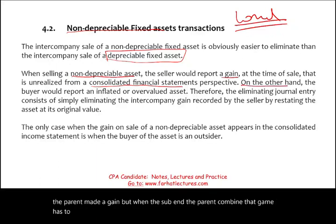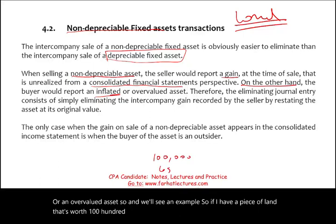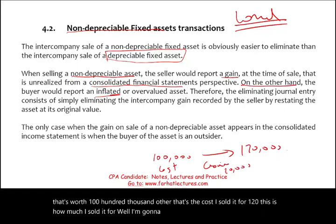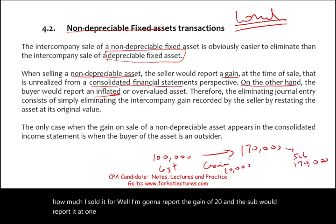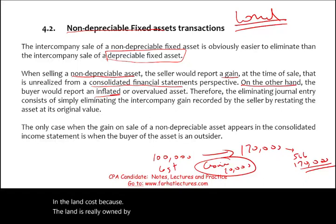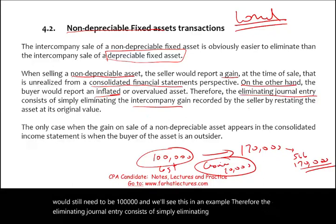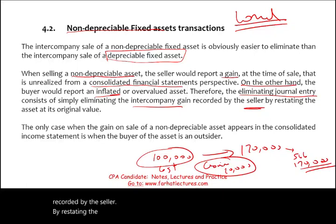The buyer also reports an inflated or overvalued asset. For example, if land has a cost of $100,000 and is sold for $120,000, a gain of $20,000 is reported and the sub records the land at $120,000. We have two problems: we must eliminate the $20,000 gain, and we must reduce the land back to $100,000. The eliminating journal entry simply removes the intercompany gain and restates the asset at its original value — debit the gain, credit the land.